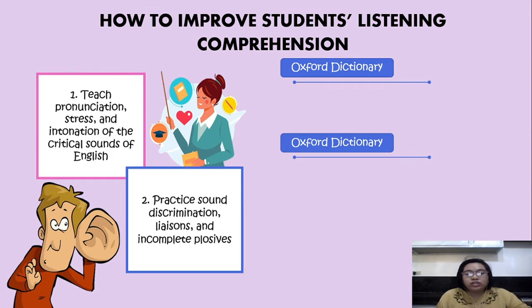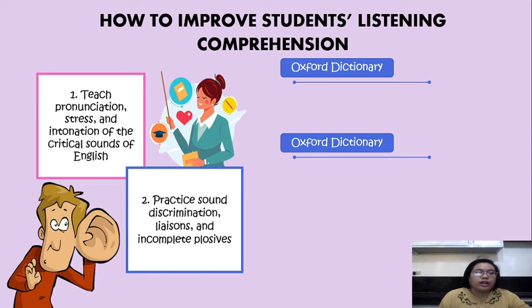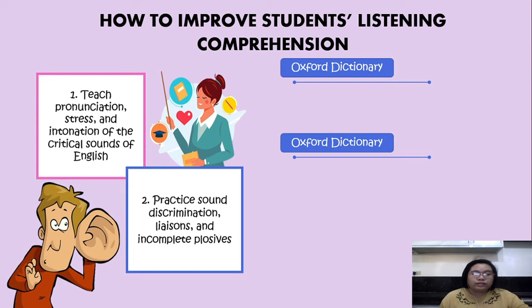Next, teach students to practice sound discrimination, liaison, and incomplete plosives. Sound discrimination, also known as auditory discrimination, focuses on the ability of an individual to recognize, compare, and distinguish between distinct and separate sounds. It allows a person to tell the difference between words and sounds that are similar as well as words and sounds that are different. One good example is the words 'forty' and 'fourteen' — they may sound alike but they have different meanings.